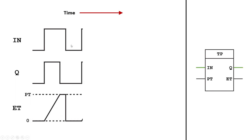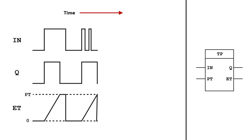Let's try again. I turn on the input, the output turns on immediately, and the elapsed time starts counting because the pulse is active and we want to count its length. Even if I turn off the input, the elapsed time will still count — the pulse will be on for that full amount of time, no matter what. I can turn the input on and off and nothing changes before the elapsed time reaches the preset time. We generate the same pulse of the same length both times.